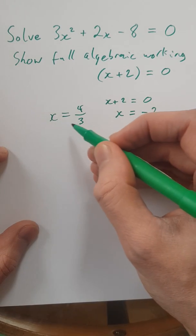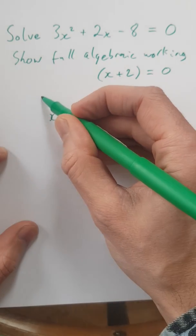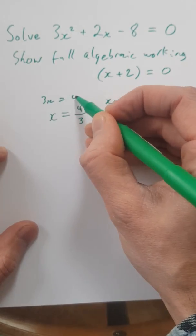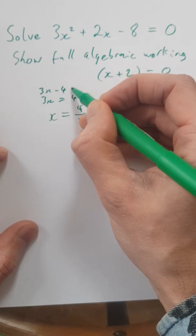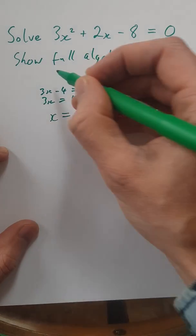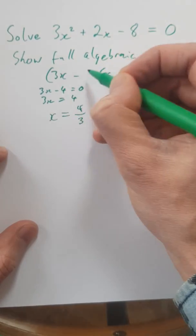If we rearrange this one, if we move the 3 up, we've got 3x equals 4. And then 3x minus 4 equals 0. So that becomes our other factor.